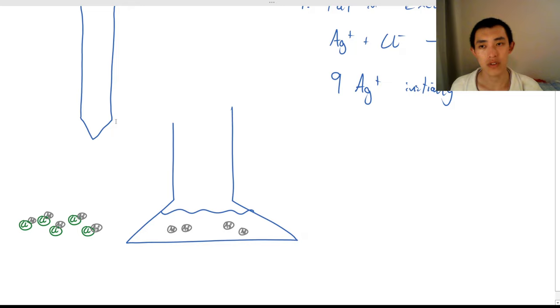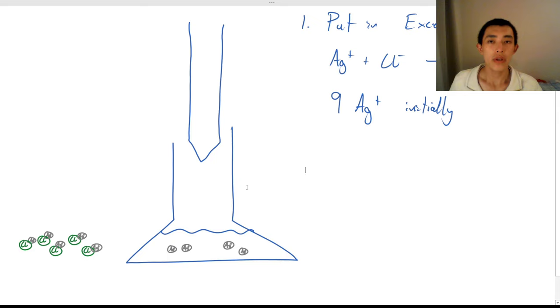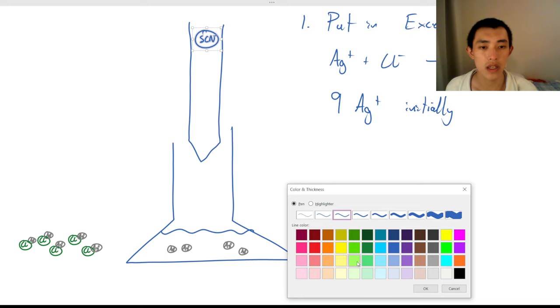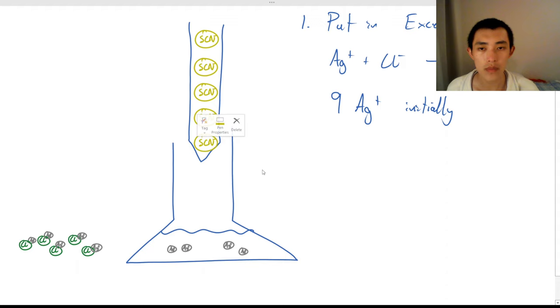This time, what we want to do is we want to fill our beaker with KSCN, potassium thiocyanate. You might remember this particle from before. It's like a faint orangey color, but you can't see faint orangey colors. It's very faint white yellow color.